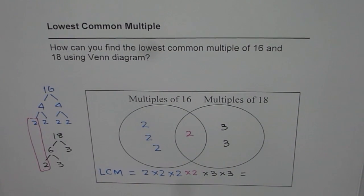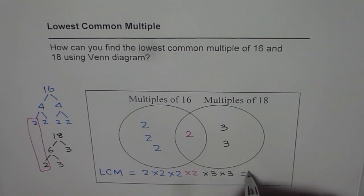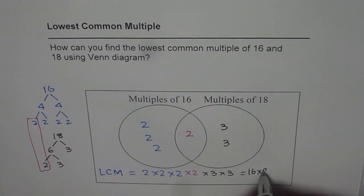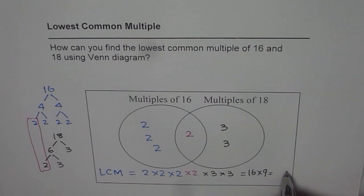what do we get? We get 2 times 2 is 4, 4 times 2 is 8, 8 times 2 is 16. And 3 times 3 is 9. So 16 times 9. Now, 9 times 6 is 54, carry the 5. 9 times 1 is 9, plus 5 is 144. So the LCM is 144.